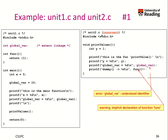Now we have unit2.c, and we try to compile it. We try to use global_var as well — for instance, printing out its value. When we try to compile this code, we would get the message 'undeclared identifier'. That means, typically, undeclared means it's not in the symbol table.